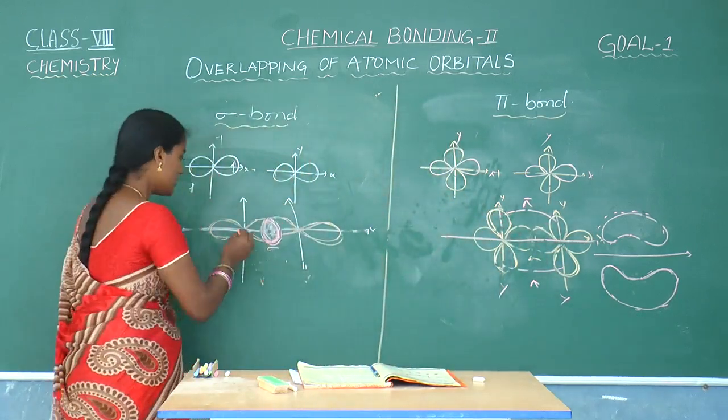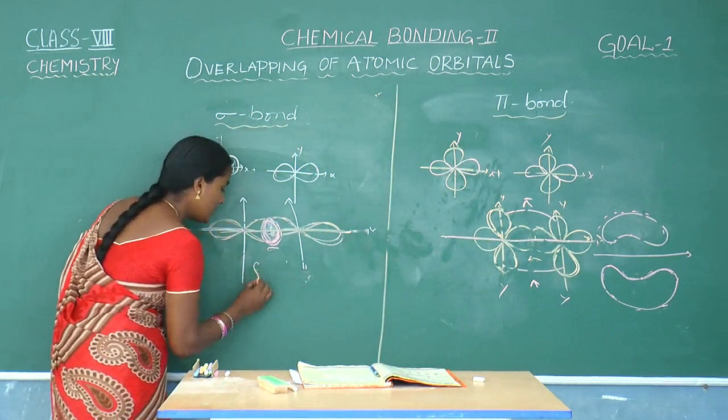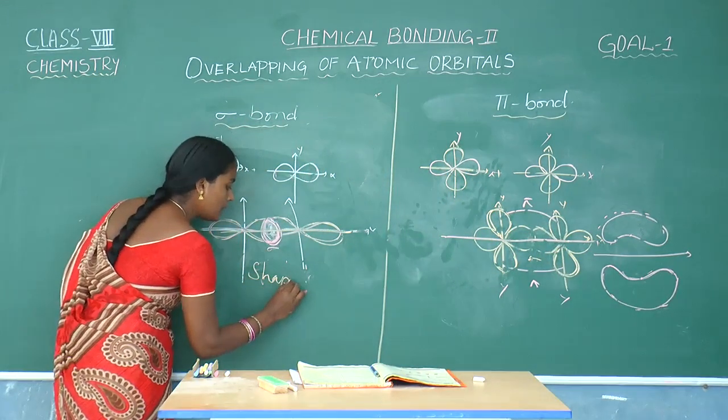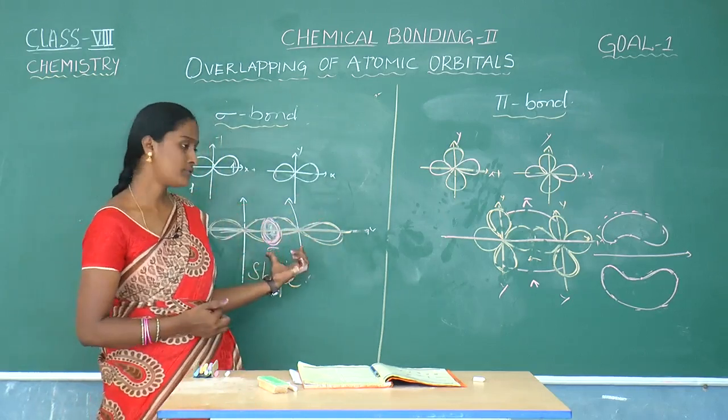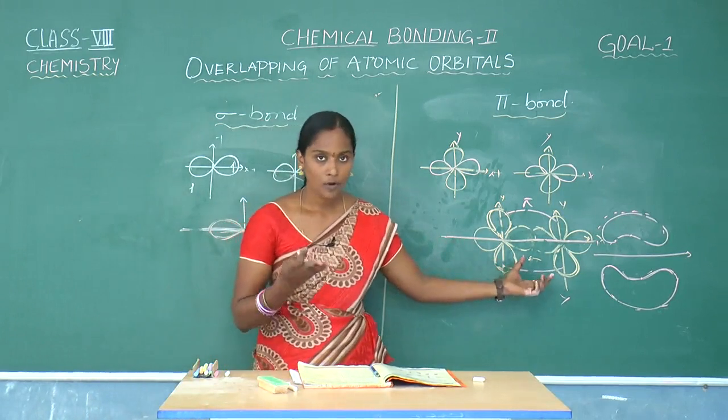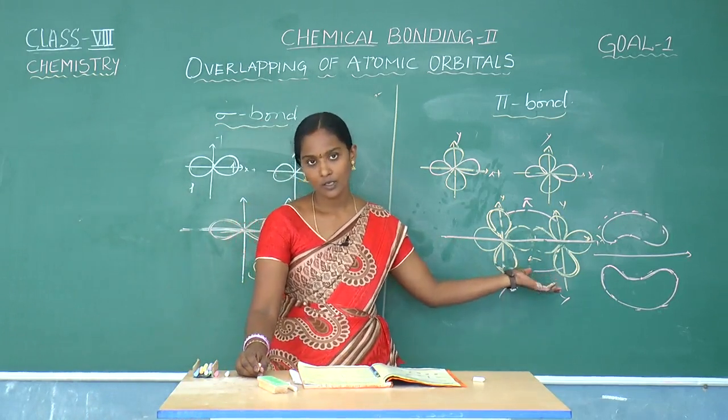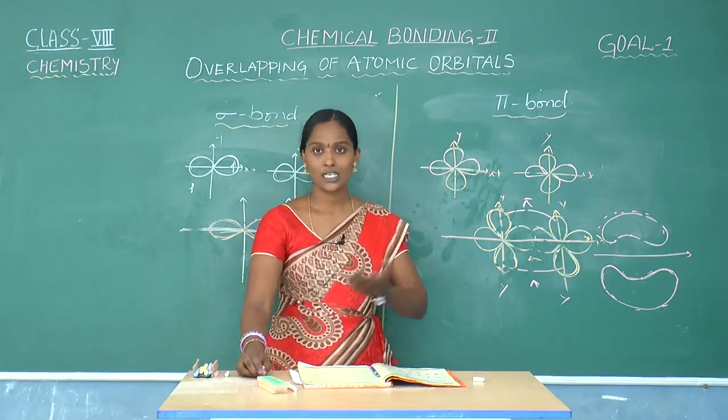Because of the sigma bond formation we can say the shape of the molecule. Shape of the molecule decides the number of sigma bonds, but pi bond does not affect any shape of the molecule because the electrons are moving here and there.